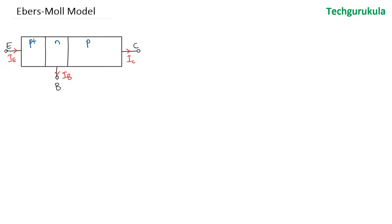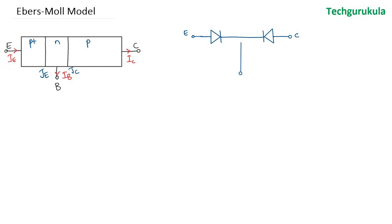If you observe here, we have an emitter junction between the emitter and base, which is a PN junction. Let me draw a PN junction here — this is similar to the PN junction near the emitter, which is the emitter junction. We also have another PN junction between the collector and the base, called the collector junction. So we have an emitter terminal, a collector terminal, and in the middle, the base terminal.